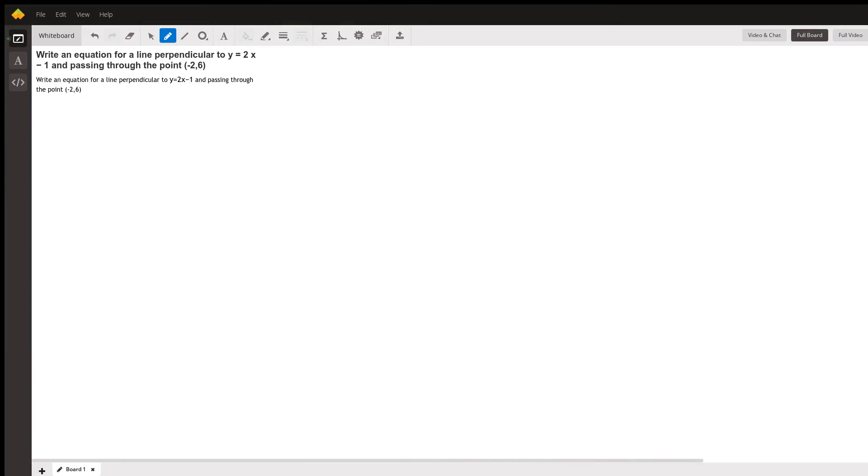Hi, so you asked for help to write an equation for a line perpendicular to y equals 2x minus 1 and passing through the point (-2, 6).